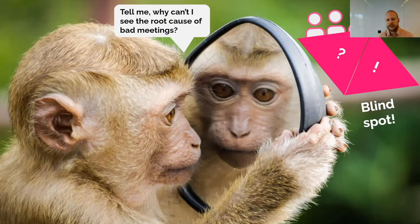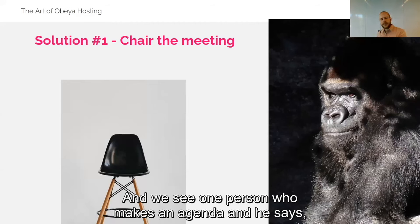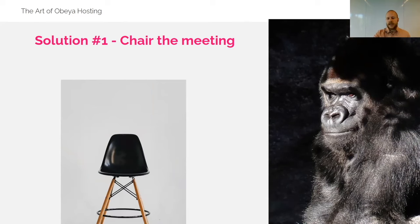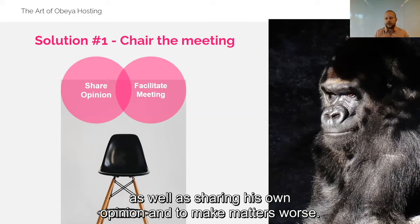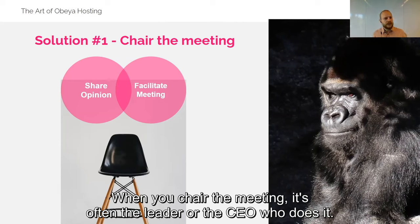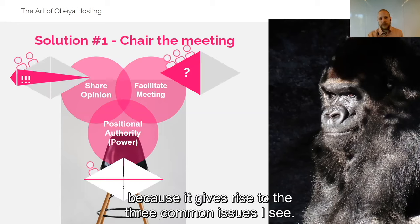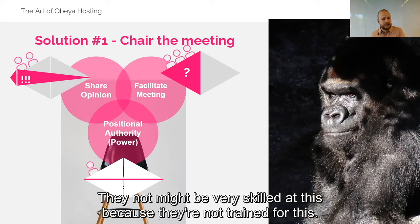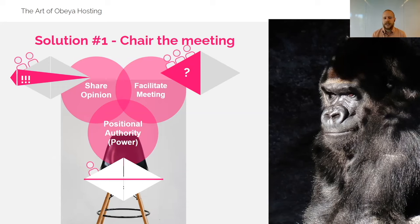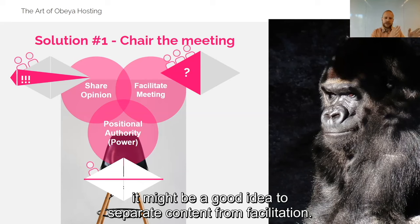Fortunately, we have already solved this in some ways. The first solution I often see is chairing the meeting — one person makes an agenda, says let's move to the agenda items, and keeps track of time. But this person has a double role: both facilitating and sharing their own opinion. To make matters worse, it's often the leader or the CEO who does it — so you have positional authority messing things up. The facilitation skills of a CEO may not be strong, they share opinions, and they even have the authority to cut things short.